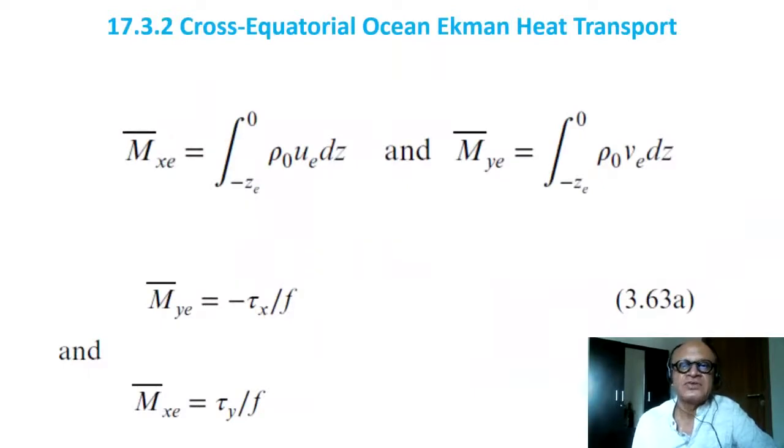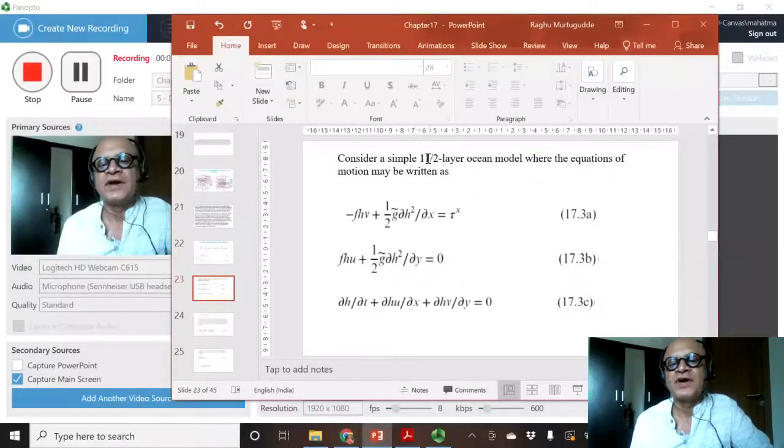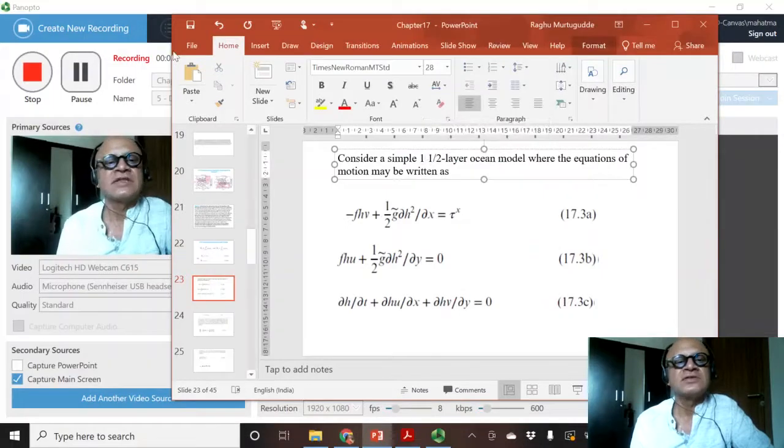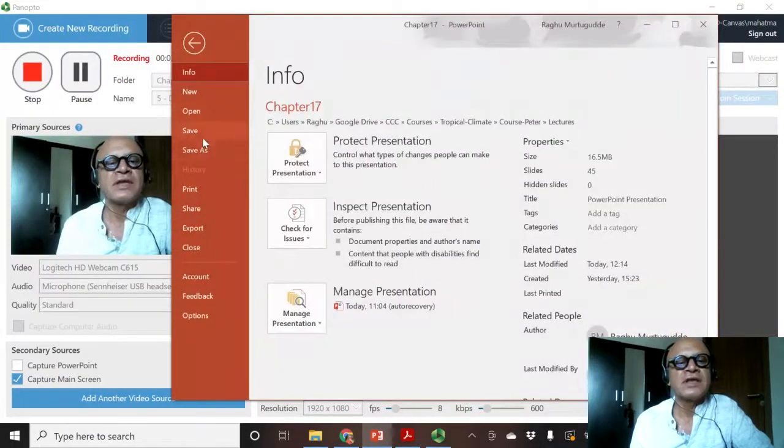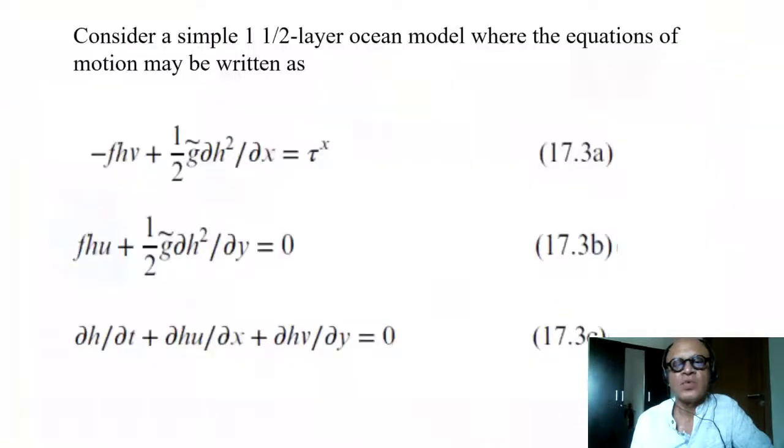The idea here is to see if cross-equatorial ocean Ekman heat transport can occur. It turns out that the Indian Ocean has a very typical distribution of heat, so that does happen. We will look at a one-and-a-half layer model like we did before, where the active layer is above the thermocline and then below is a deep motionless layer with no pressure gradients.